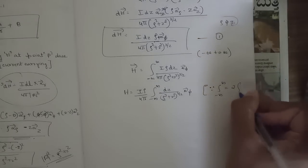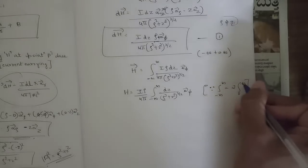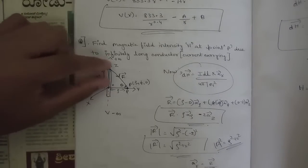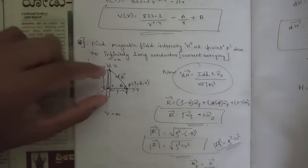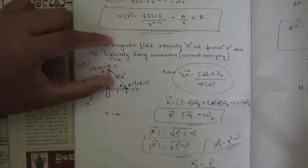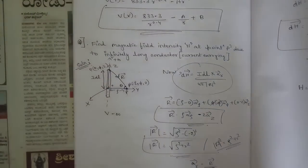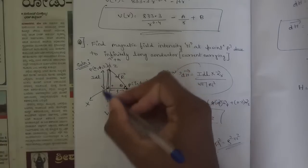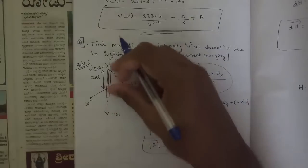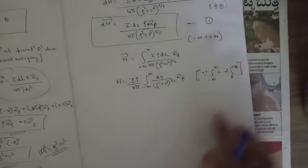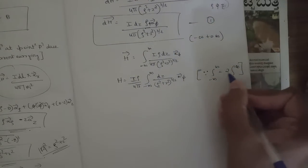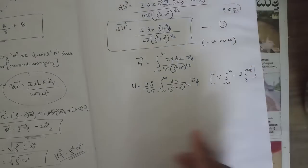Since the conductor is placed symmetrically at the origin — one part extending to +∞ and one to −∞ — we can write the integral from −∞ to +∞ as two times the integral from 0 to +∞. This makes our calculation easier. So H = (Iρ / 4π) · 2 ∫₀^∞ dz / (ρ² + z²)^(3/2) aφ.